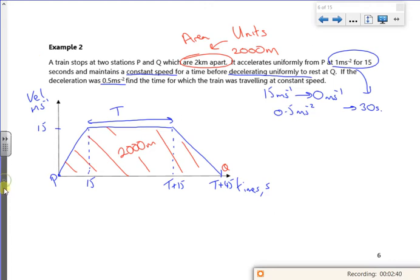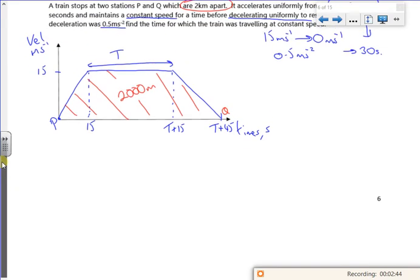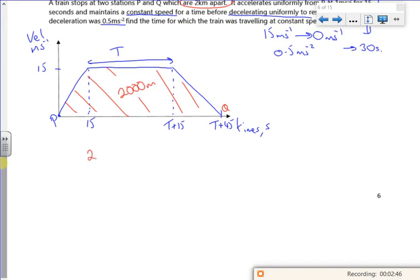Right, so let's use that then. Let's look at my trapezium. So I know that 2,000 meters is the area of a trapezium. So it's half of the average of the parallel sides, T plus T plus 45, multiplied by the perpendicular height.